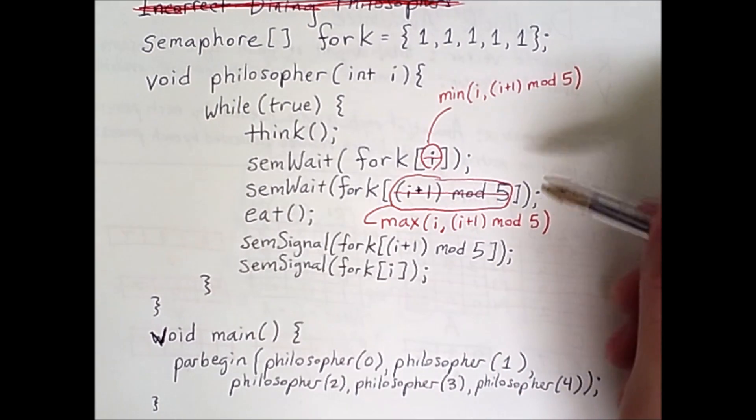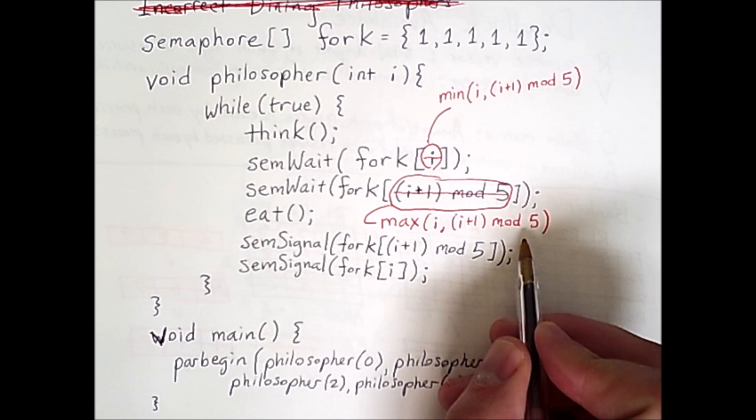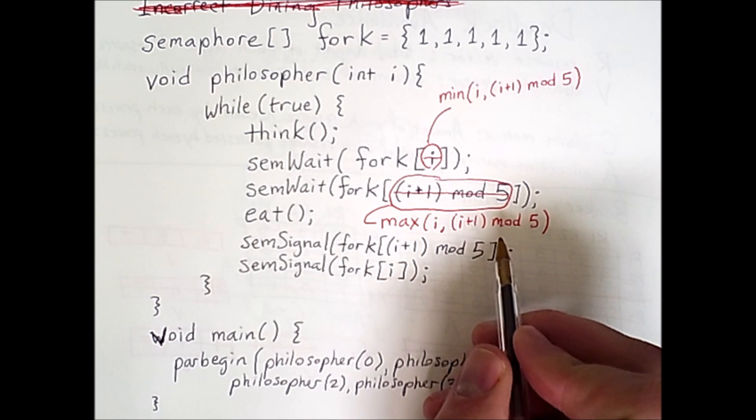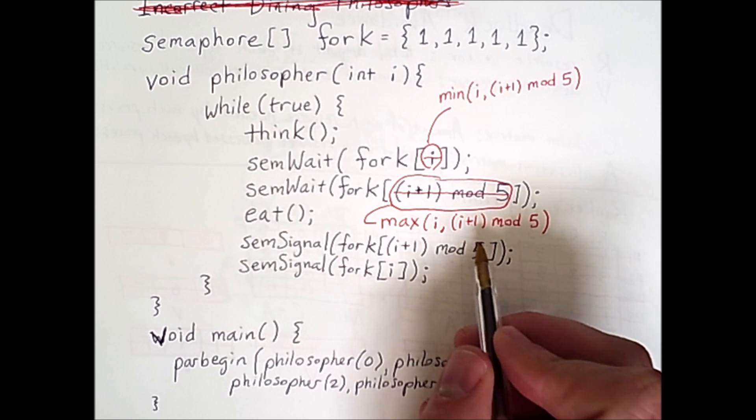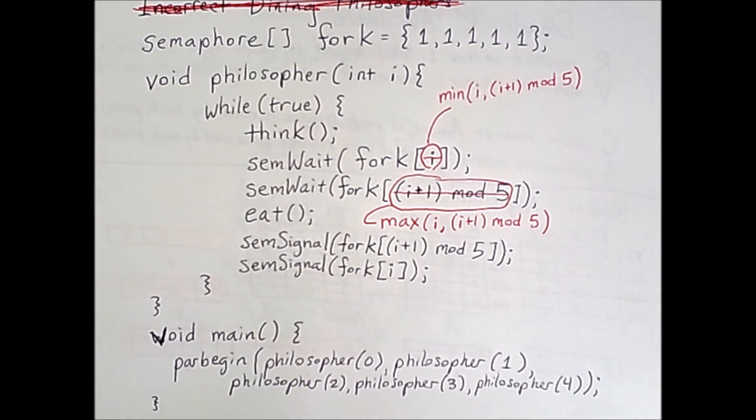Similarly, the second fork claimed is the maximum of those same two values. The same two forks are being claimed, except we're always making sure that the one that has the lower subscript index or the lower array index is claimed first.